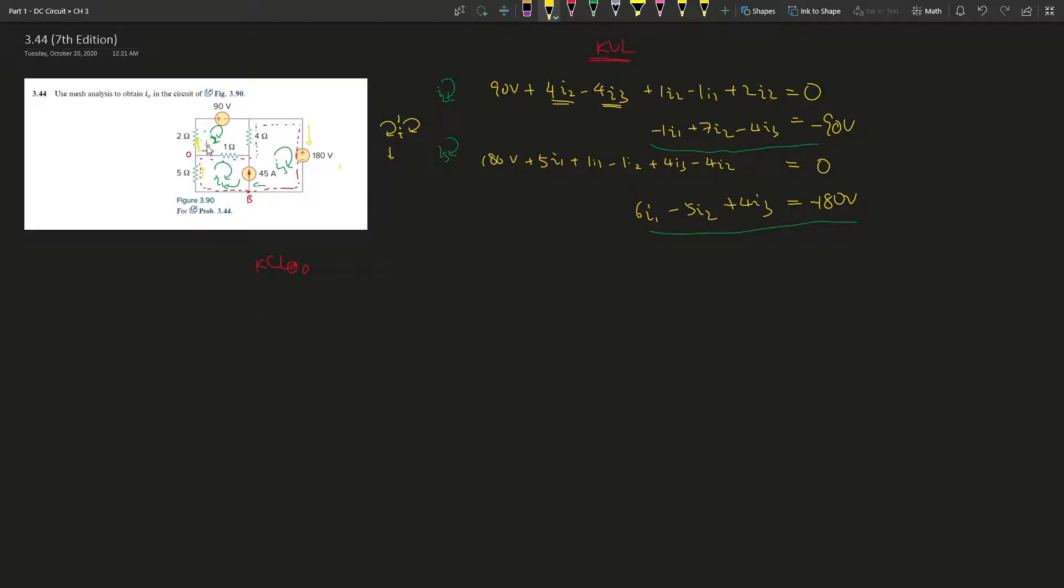So I0 and I2 is leaving, I2 plus I0 equals the ones that's entering, which is I1. Or you can say as I1 minus I2 to give us I0.